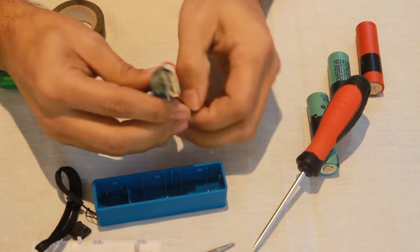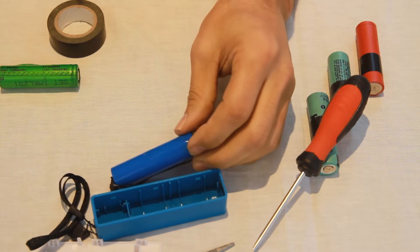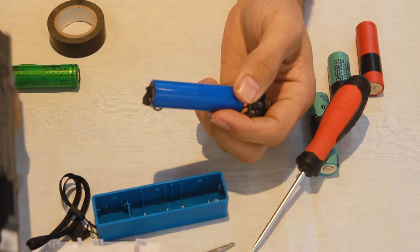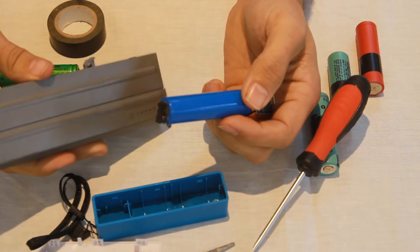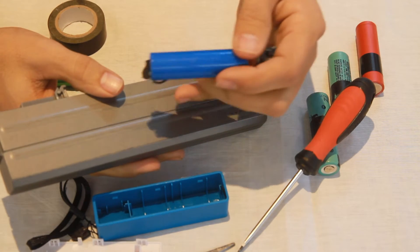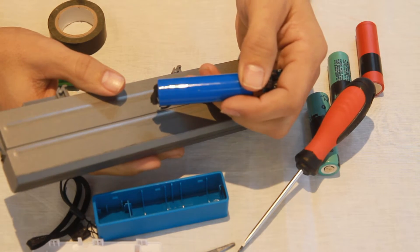These are 18650 cells. You can get these from plenty of sources. I personally choose to recycle old laptop battery packs because I know that the batteries in here are going to be a genuine 2.6 or 2.8 amp hour.